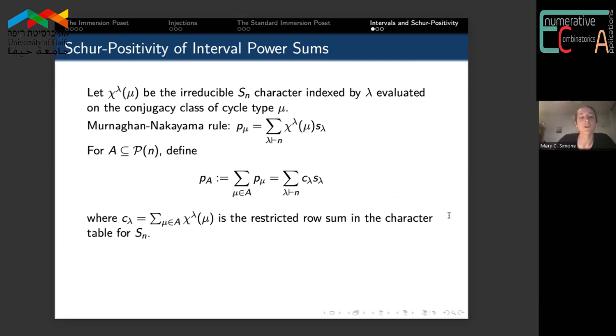We'll consider a subset of partitions and take this sum of power sum symmetric polynomials over this subset of partitions. We can then expand in terms of the Schur polynomials where now this coefficient is the restricted row sum in the character table for the symmetric group, where we only add up the columns in which μ appears in this subset A.